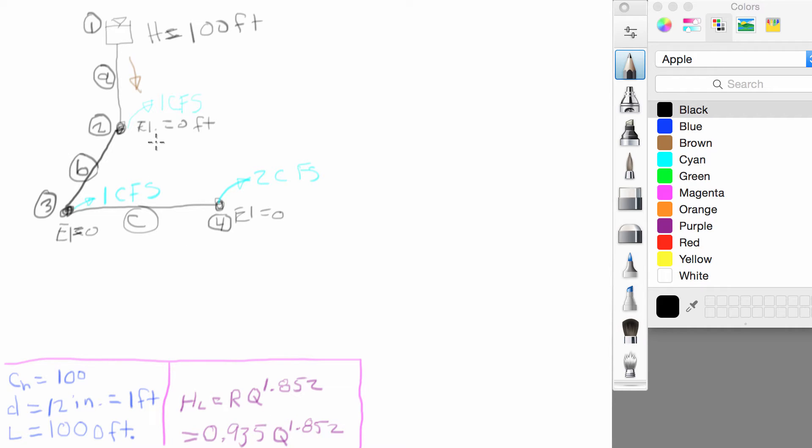This was a pretty easy network to solve because we knew exactly what the flows were in each pipe by inspection. Now we're going to make things a little more tough so that we can begin to understand why we need a hydraulic model such as EPAnet and how it works.